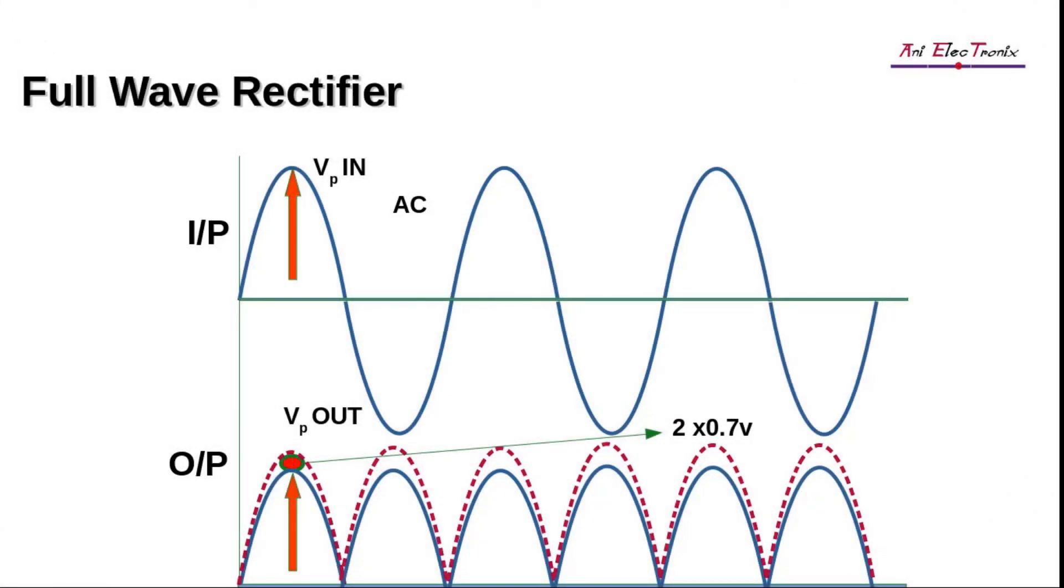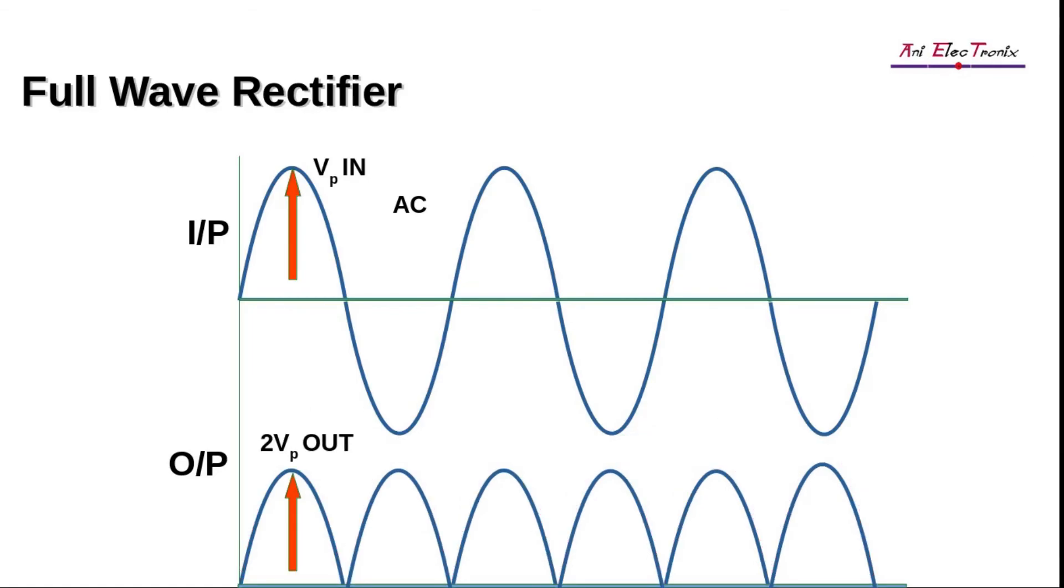The peak DC voltage will be VPout equal to VPin minus 1.4 volts for silicon-made diode. And the average output DC voltage VDC equals 2VP divided by pi. This output DC voltage is also not constant and is pulsating.